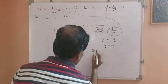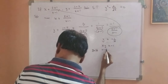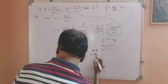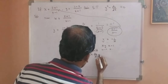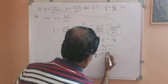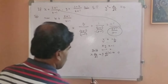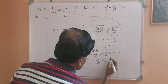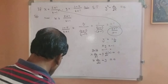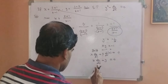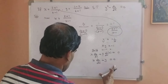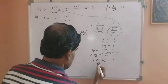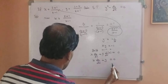Now differentiating x·y equals −1 with respect to x using the product rule: x·(dy/dx) + y·(dx/dx) equals 0, which gives x·(dy/dx) + y equals 0. From x·y equals −1, we know x equals −1/y.